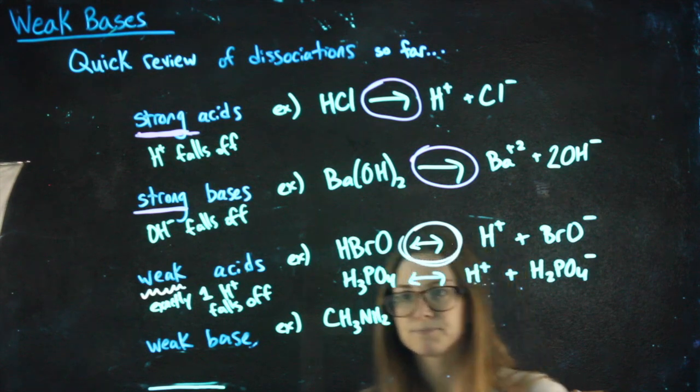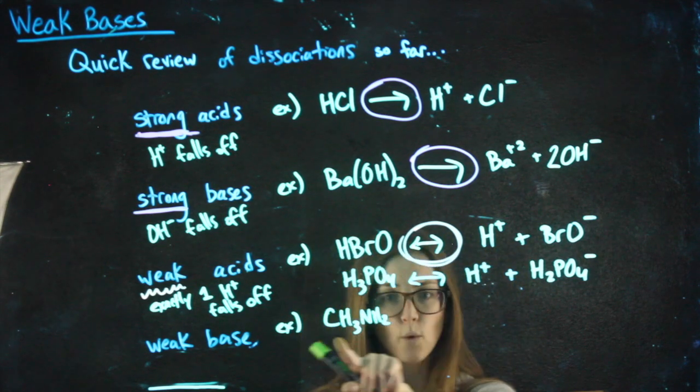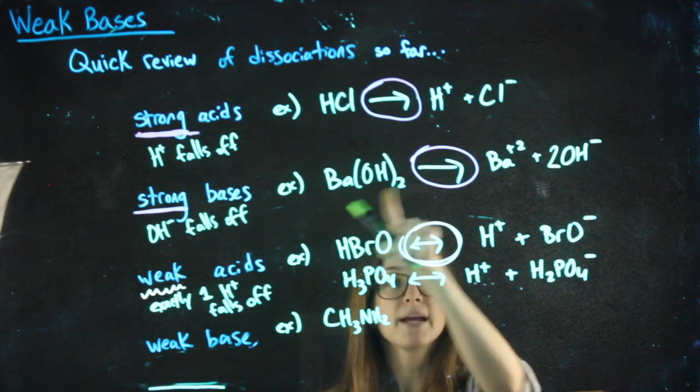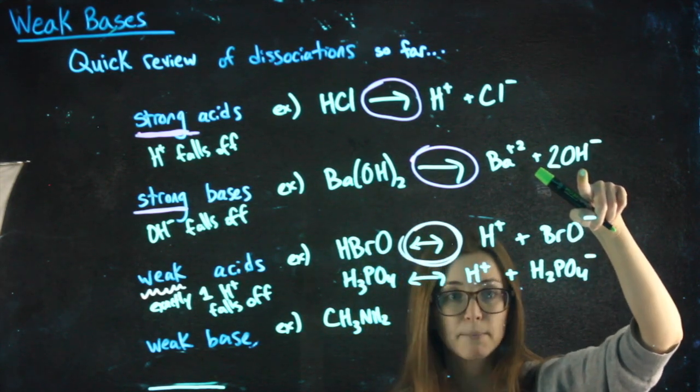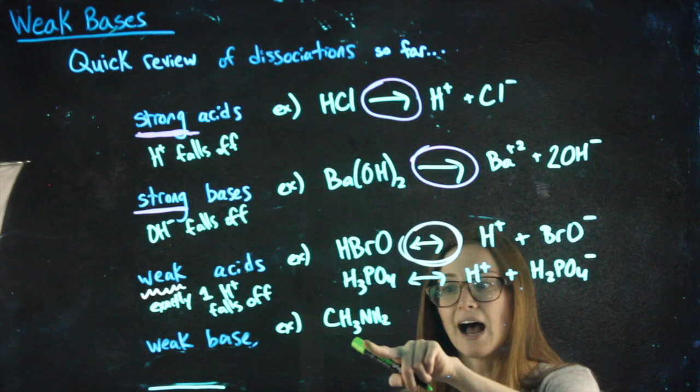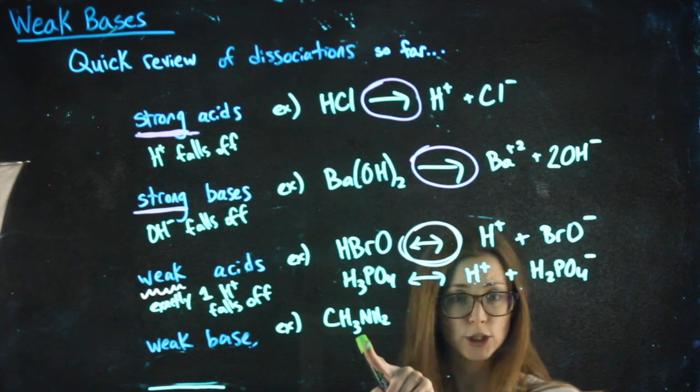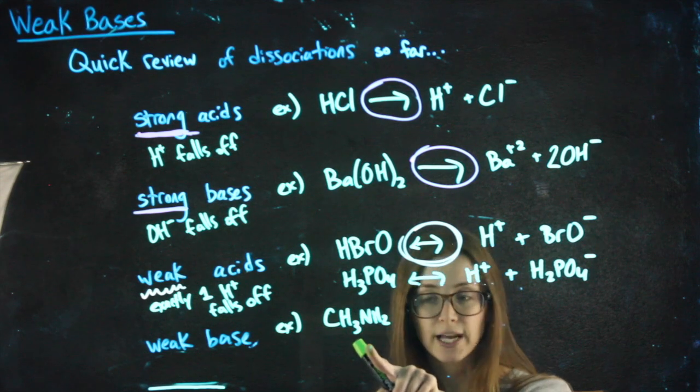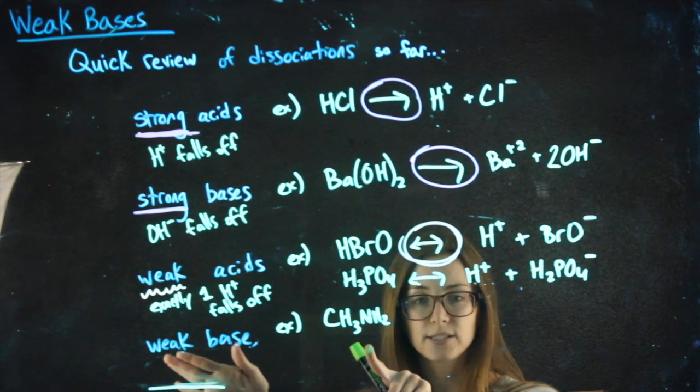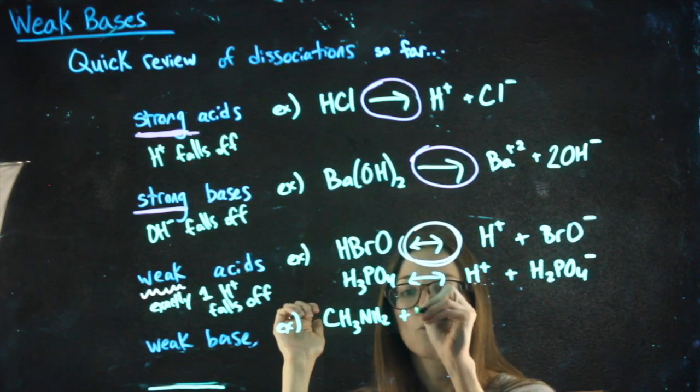When we have a weak base, there's no OH in here. A strong base, we see where our hydroxide is coming from that's making it a basic solution. I have no idea right now where that hydroxide is going to come from. So in order to show you what's actually happening, when we do a weak base dissociation, add water.